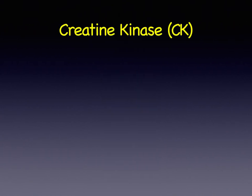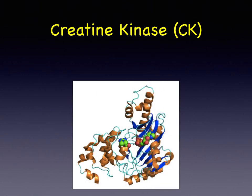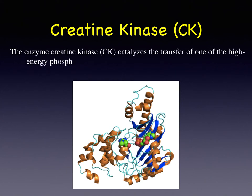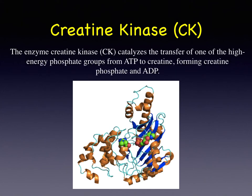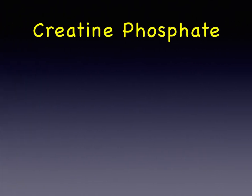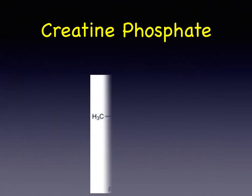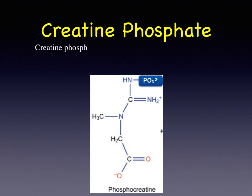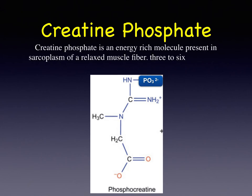Creatine kinase is an enzyme which catalyzes the transfer of one phosphate group from ATP to creatine to form creatine phosphate and ADP. Creatine phosphate is an energy-rich molecule present in the sarcoplasm of a relaxed muscle fiber, three to six times more plentiful than ATP.